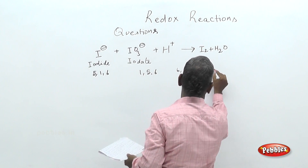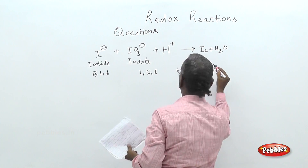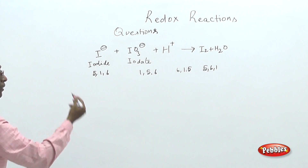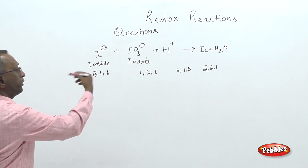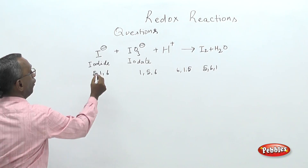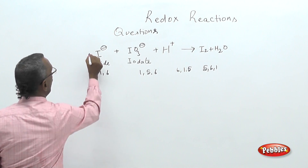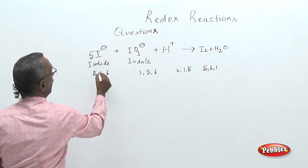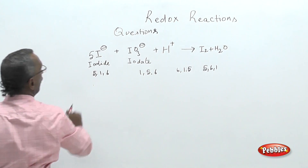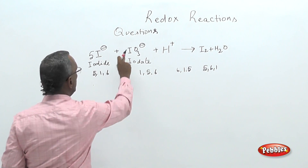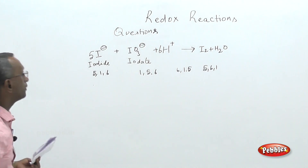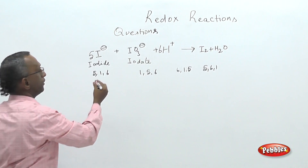There are two methods to solve this — either by a balancing method or by trial and error. For the first choice, stoichiometric coefficients in order are: 5 for iodide, 1 for iodate, and 6 for H⁺.